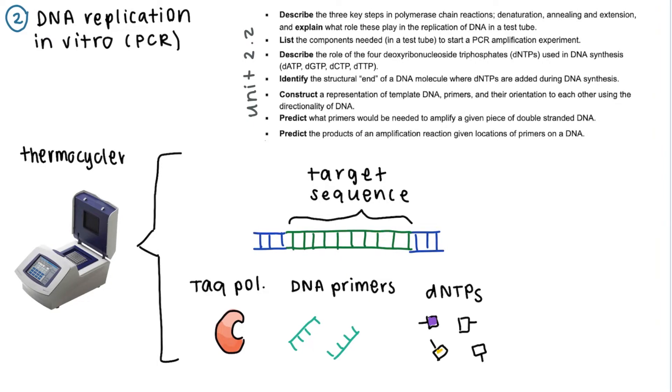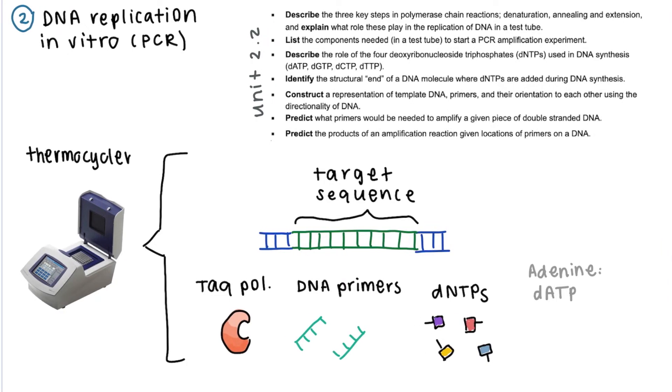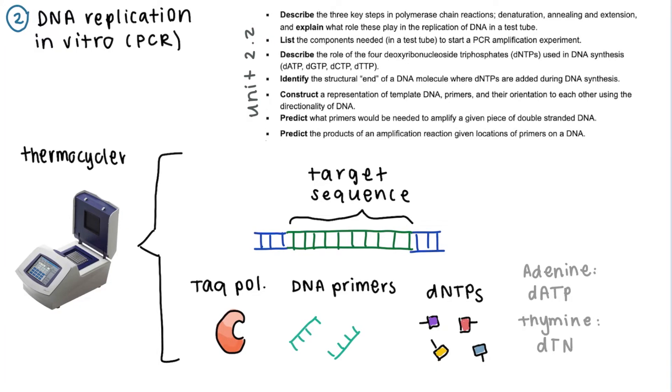Some primers and what are called DNTPs. These are nucleotides, so for example, a DATP is a nucleotide with an adenine on it, a DTTP is a nucleotide with a thymine on it, and so on.